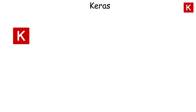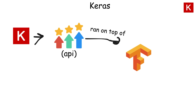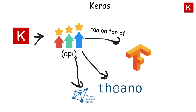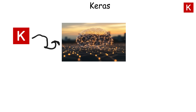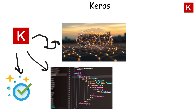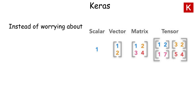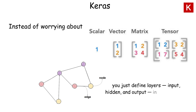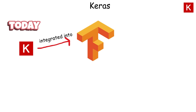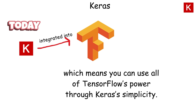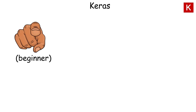Keras actually started as a high-level API that ran on top of TensorFlow, Theano, or CNTK. It simplifies neural network creation by offering clean and minimal code syntax. Instead of worrying about tensor math and graph nodes, you just define layers — input, hidden, and output — in a few lines. Today, Keras is fully integrated into TensorFlow, which means you can use all of TensorFlow's power through Keras's simplicity. If you're a beginner, Keras is one of the easiest entry points into deep learning.